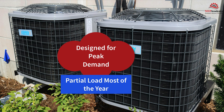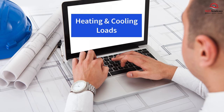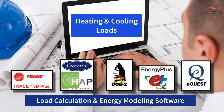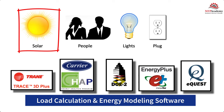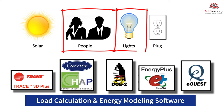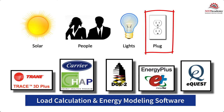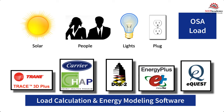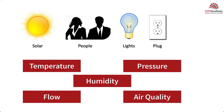HVAC systems are sized based on heating and cooling loads, often performed by load calculation software. The load calculations will take into consideration the solar load on the structure, the quantity of people in each space, heat from lights, and the plug load — which is all the equipment and appliances that use power and generate heat within the building. The HVAC control system will need to respond to these changes to maintain the environmental conditions such as temperature, pressure, humidity, and air quality.